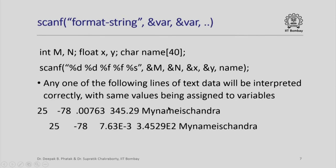Here is an example of scanf. Scanf does the opposite conversion — it uses the format string to interpret values given on input and converts each to the corresponding internal format. For example, with m and n as integer variables, x and y as floating point variables, and name as a character array, notice I write &m, &n, &x, and &y. Scanf tries to insert values into these variables, so they must be passed by pointer reference; otherwise the variables will not change.